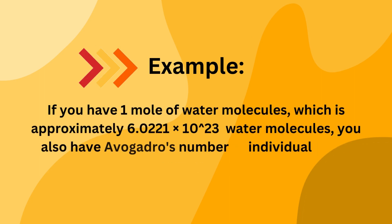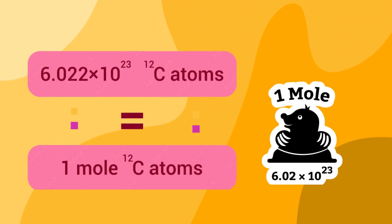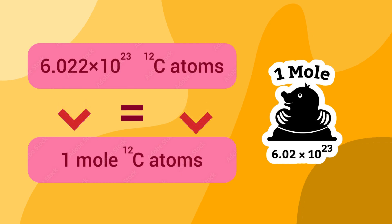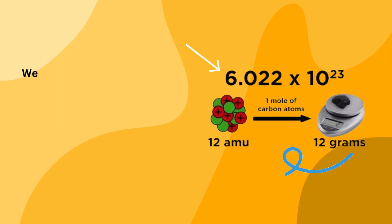Example, if you have one mole of water molecules, which is approximately 6.022 into 10 to the power of 23 carbon atoms equals 1 mole of carbon atoms.